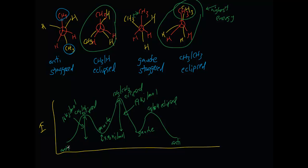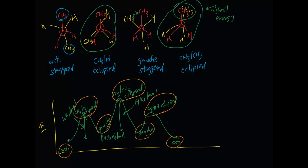Some books probably have each individual structure drawn on the diagram. If we start at anti and do 60-degree turns to each subsequent conformation and go all the way back to where we started, that should be a full 360-degree turn. From anti to methyl-H eclipsed is 60 degrees, to gauche is 120, to methyl-methyl eclipsed is 180, to the next gauche is 240, to the next methyl-hydrogen eclipsed is 300, and back to anti is a full 360-degree turn of that carbon-carbon bond.